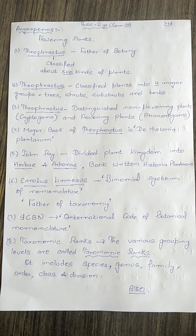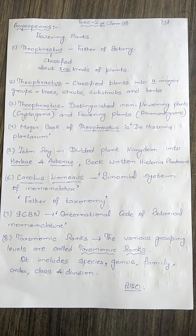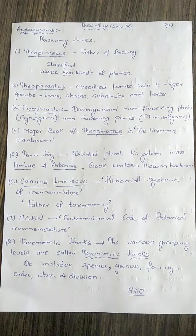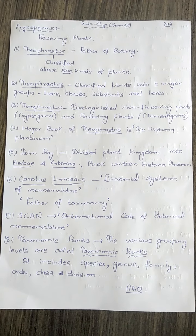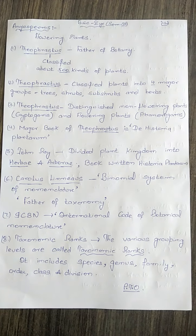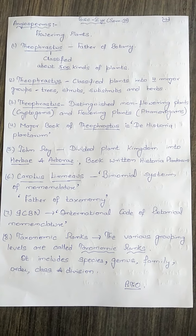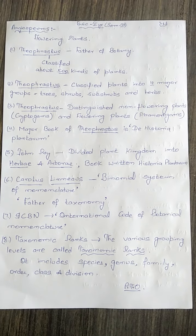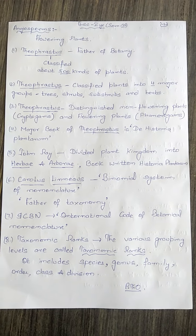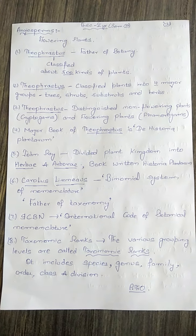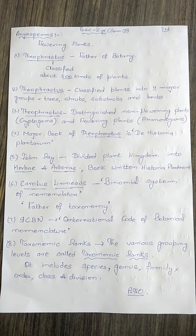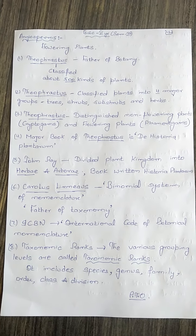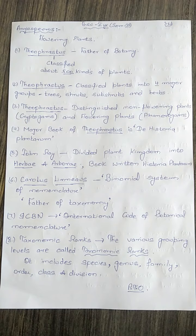Another scientist is John Ray (J-O-H-N R-A-Y). He divided the plant kingdom into Herbae and Arborae, and wrote a book called 'Historia Plantarum' (H-I-S-T-O-R-I-A P-L-A-N-T-A-R-U-M).